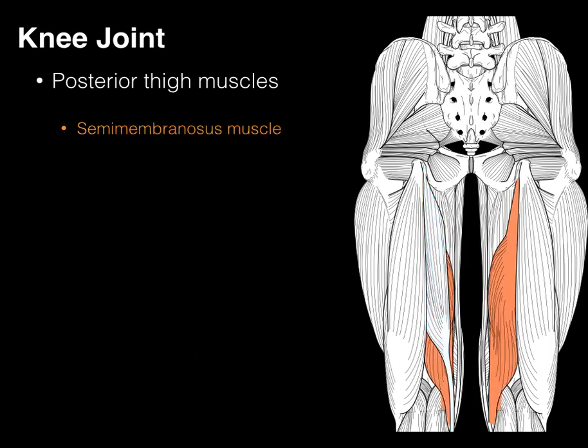There's our semimembranosus muscle. It also arises from the ischial tuberosity, and it courses down to attach on the proximal tibia.